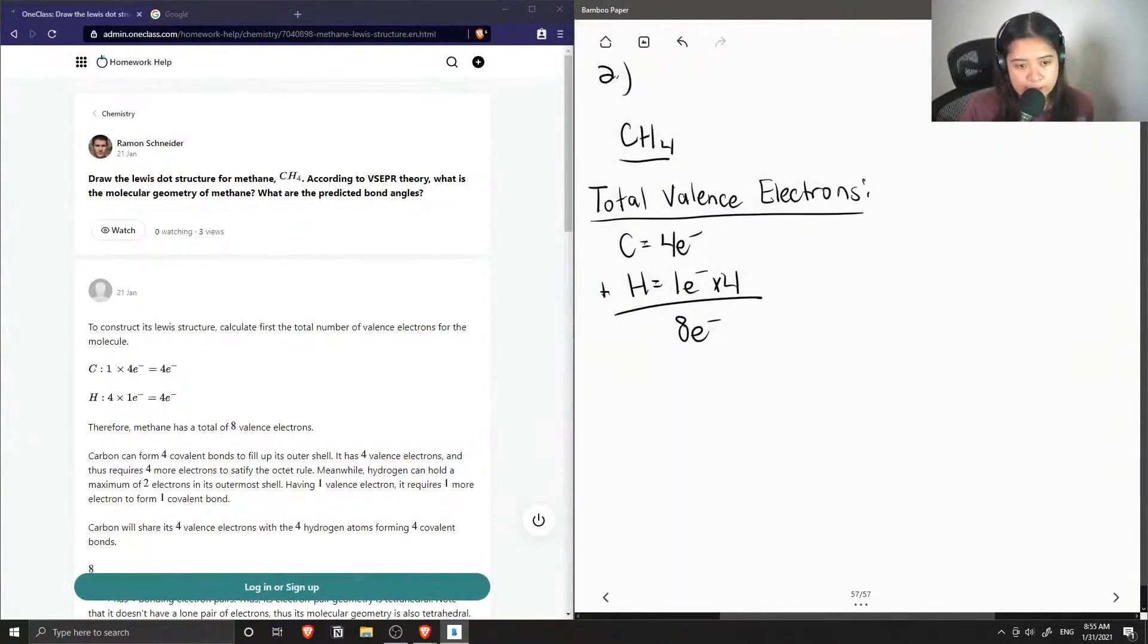Now let's draw a skeletal structure showing carbon as our central atom, since it can form multiple bonds, unlike hydrogen, which can only form one bond since it has one valence electron.